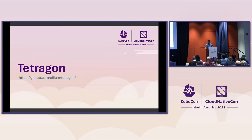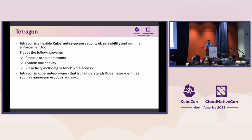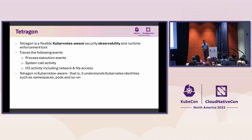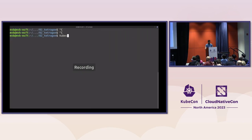The second project I want to talk about is Tetragon. The definition of Tetragon is: a flexible, Kubernetes-aware security observability and runtime enforcement tool. By default Tetragon traces different events like process executions, syscall activity, and I/O activity including networking and file access. Kubernetes-aware means it understands the different components of Kubernetes — in other words, it is able to provide information about the Kubernetes pod, the Kubernetes container, and so on.